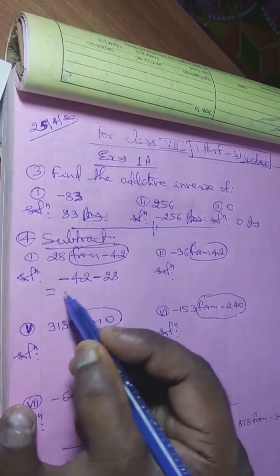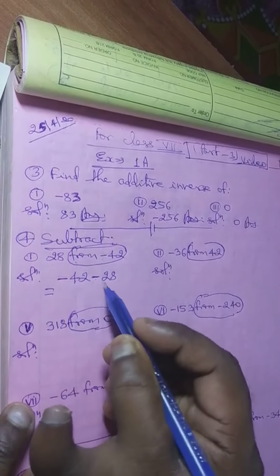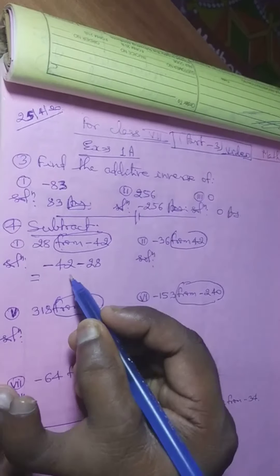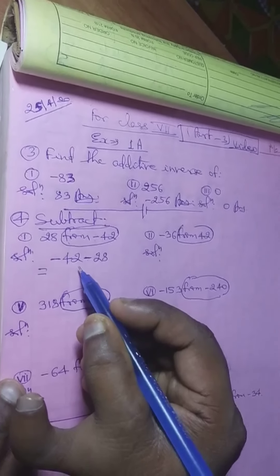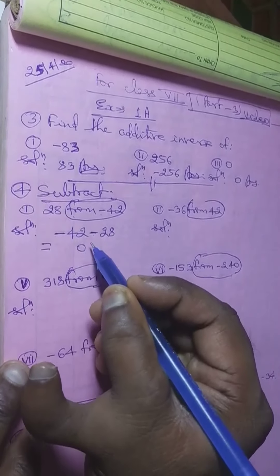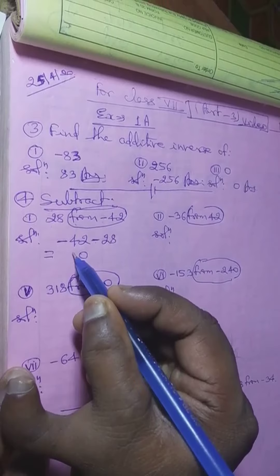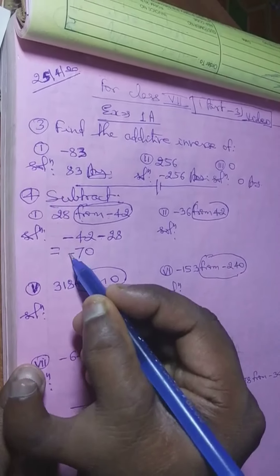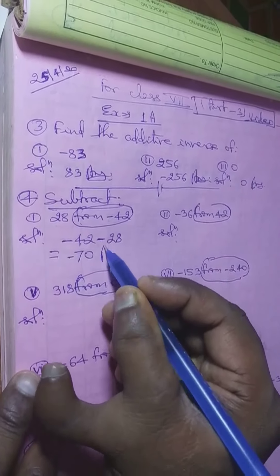Both numbers have the same sign, so we add them. Adding 8 and 10 gives 18, carrying over: 4 and 6, then 1 and 7, giving the answer with a negative sign: minus 70.